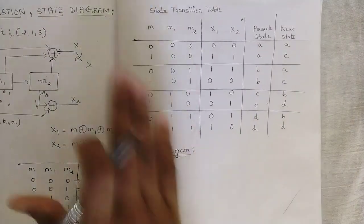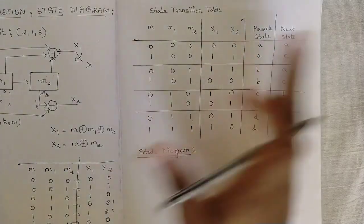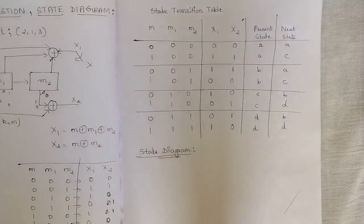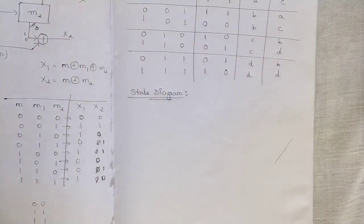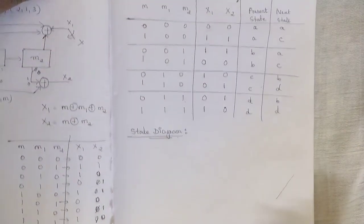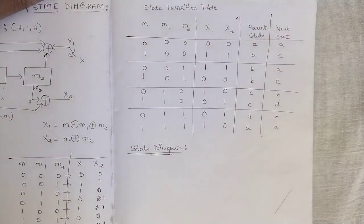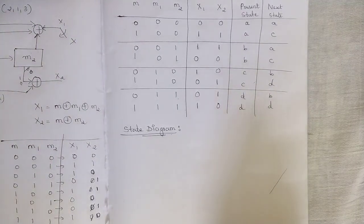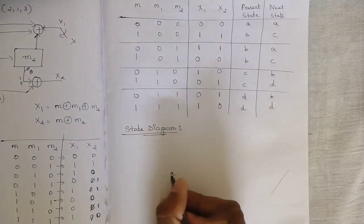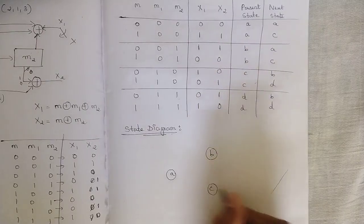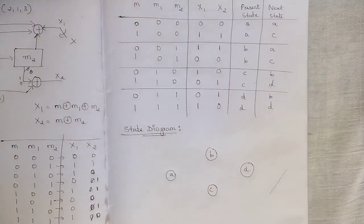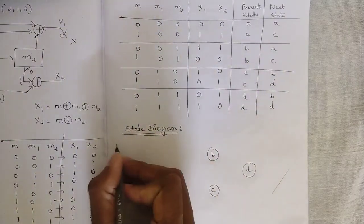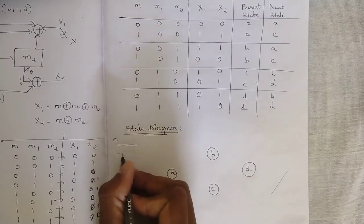Based on present states, next states, inputs (0 or 1), and outputs, you can now draw the state diagram. By seeing the state transition table only you can draw the state diagram; otherwise it is difficult. First, place the four states A, B, C, D in the standard arrangement. For representing transitions: draw a bold line for input 0 and a dotted line for input 1.